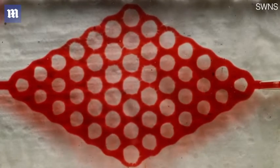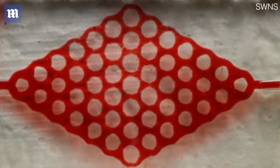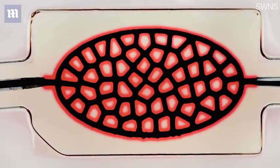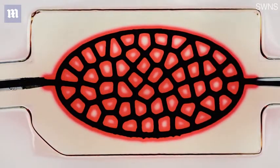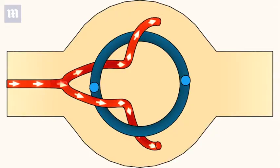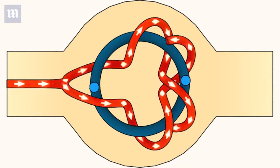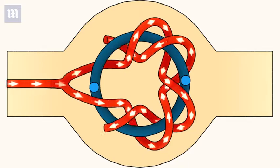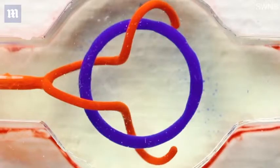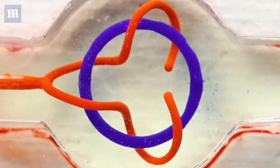One of the biggest challenges in making living tissue is figuring out how to get nutrients and oxygen into the tissue and how to get waste products out. The way that our body does this is with vascular networks, but it's been very difficult to get blood vessel architectures into soft materials in which cells can live.